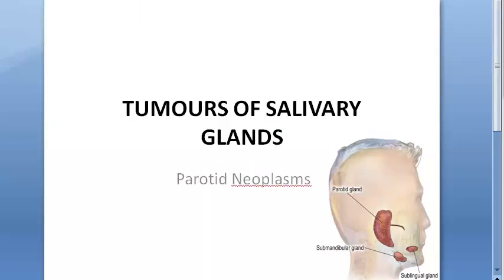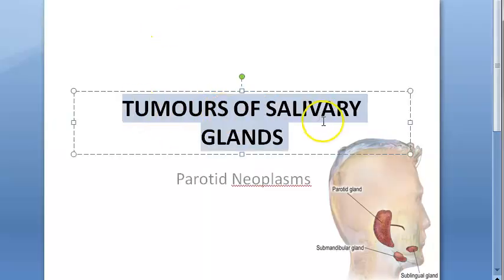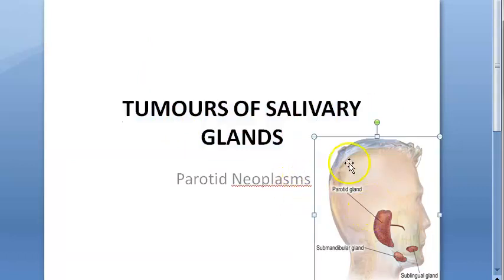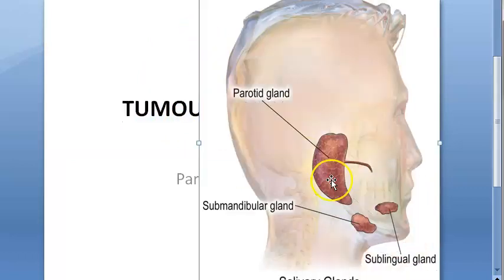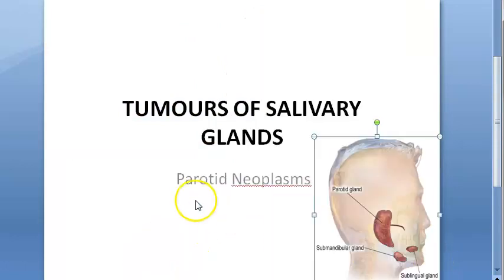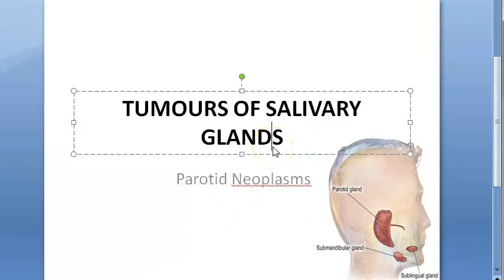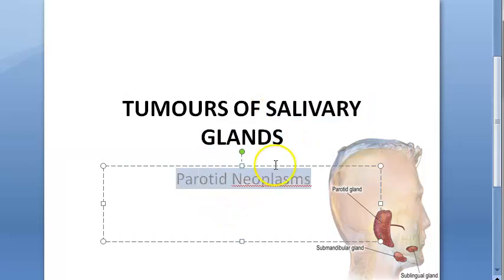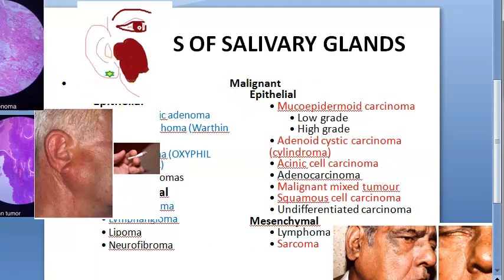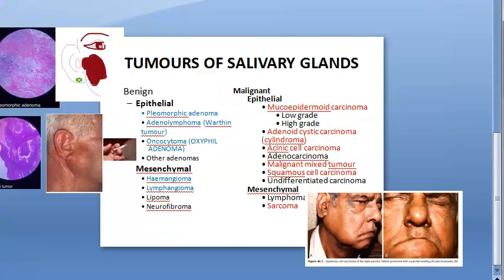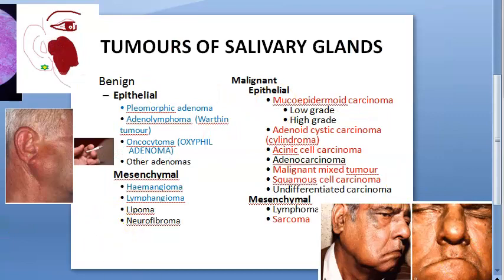In this video we want to look at the tumors of salivary glands. The major salivary glands are the parotid gland, submandibular gland, and sublingual gland. We want to look at the neoplasms of these salivary glands — they can also ask this question as parotid neoplasms. You have benign and malignant conditions.